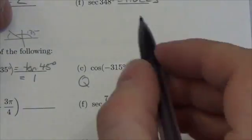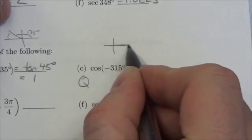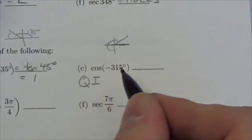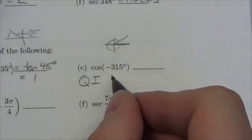Negative 315, think about that. Starting on the positive x-axis, that's going to rotate around and is actually going to be in quadrant 1, and cosine is positive in quadrant 1.